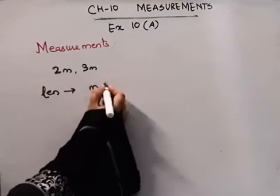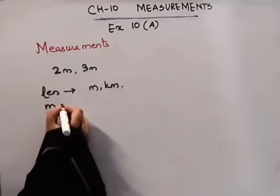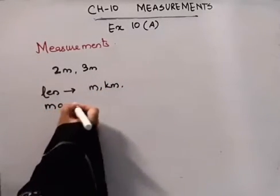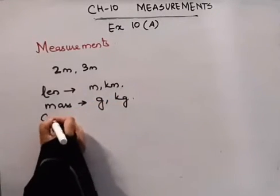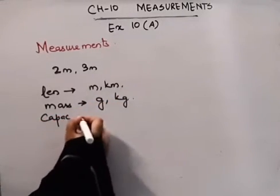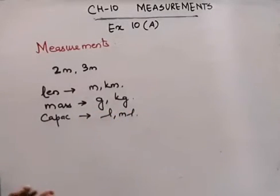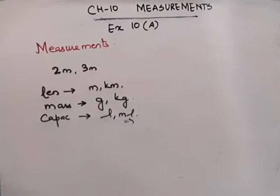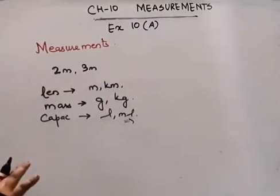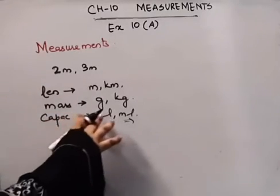We measure length in meters, kilometers, and centimeters. We measure weight or mass in grams and kilograms. We measure capacity - which is for liquids - in liters and milliliters. For example, a cold drink is not measured in kilograms; it is in milliliters. You say it is 500 ml or a 2 liter bottle. Clear? We measure capacity in liters.